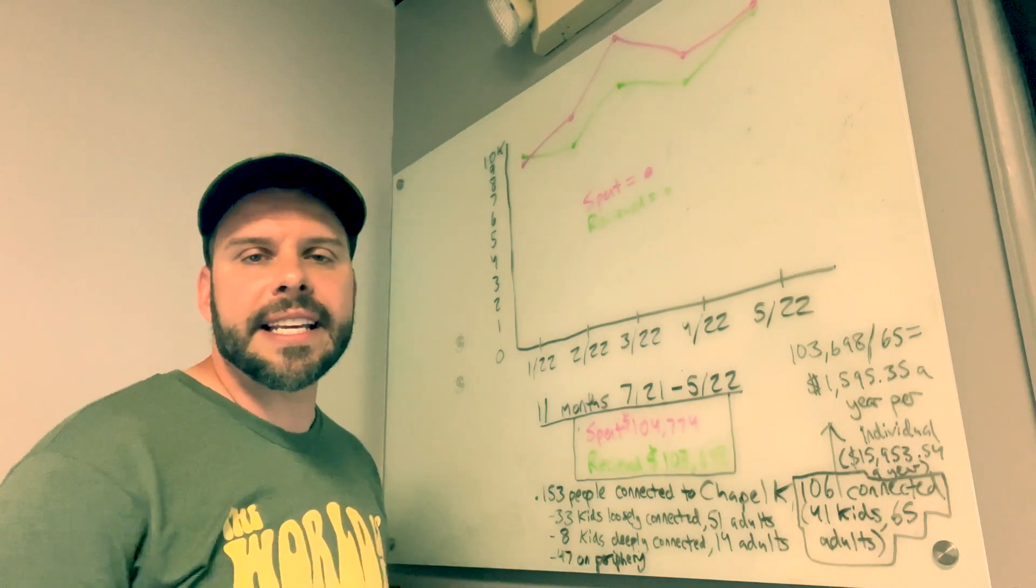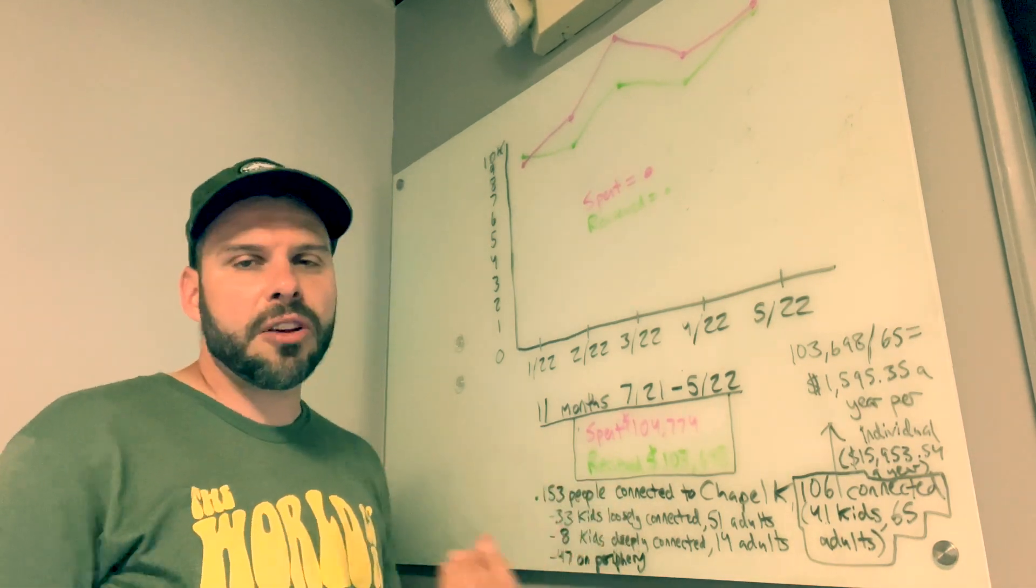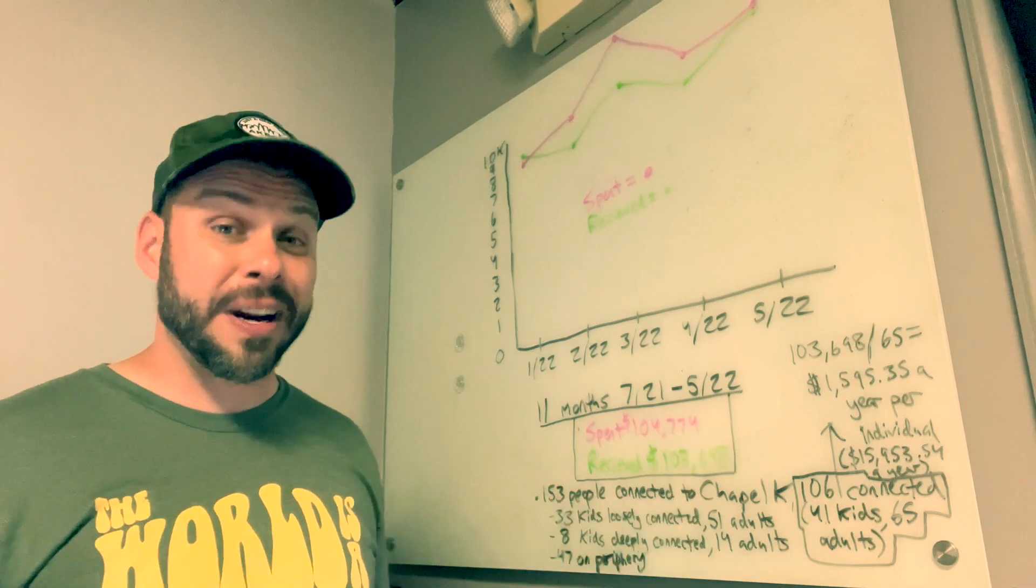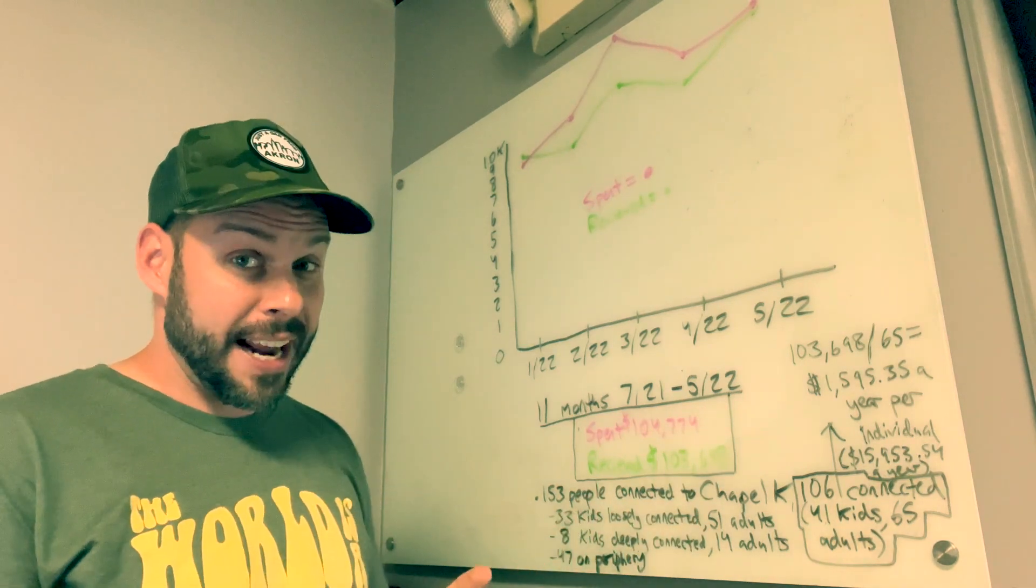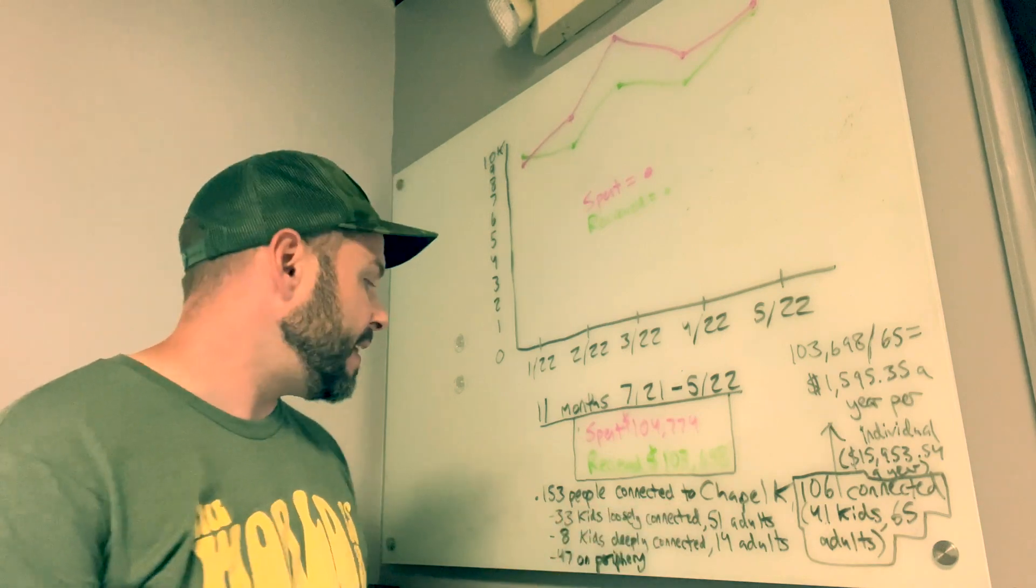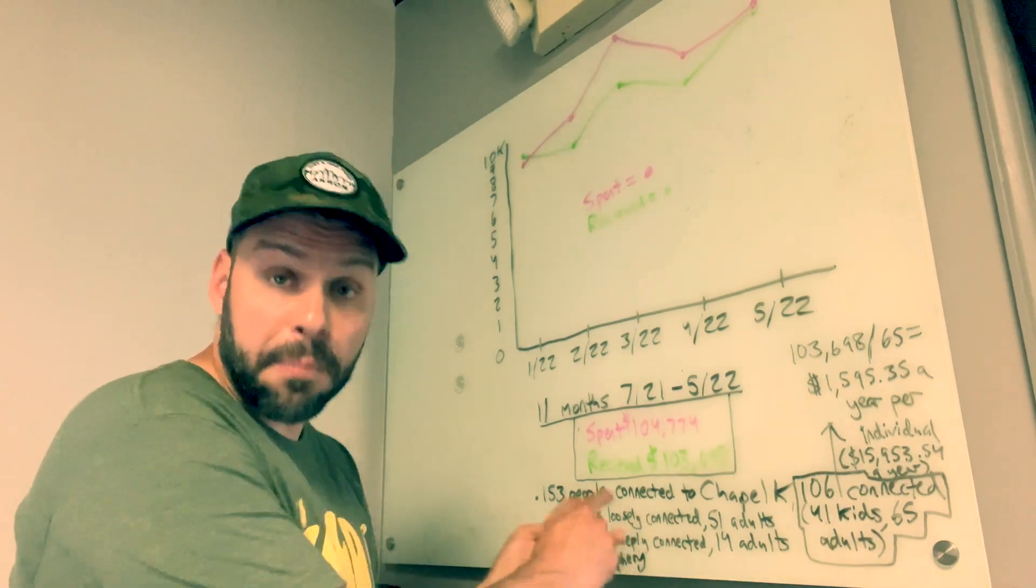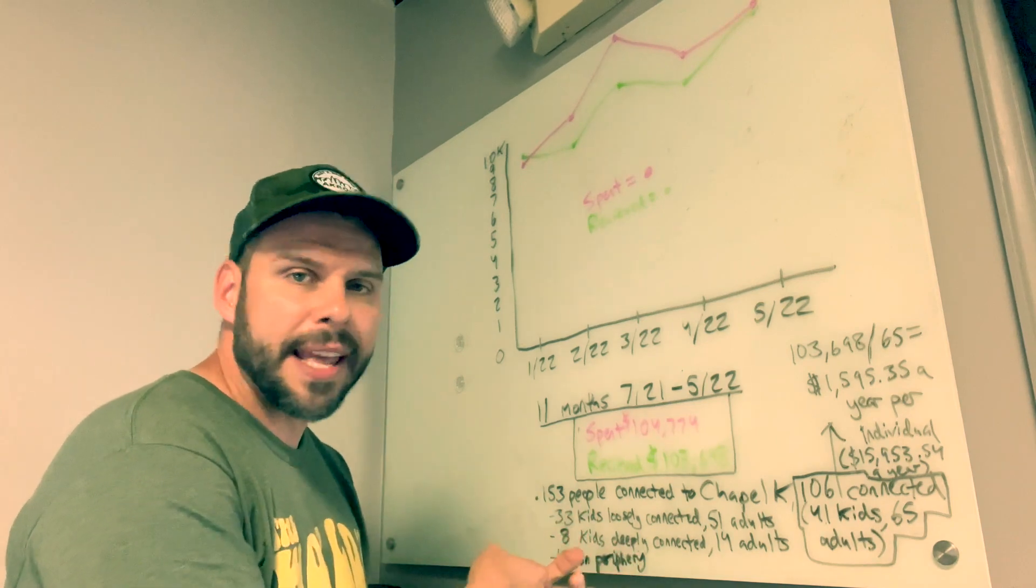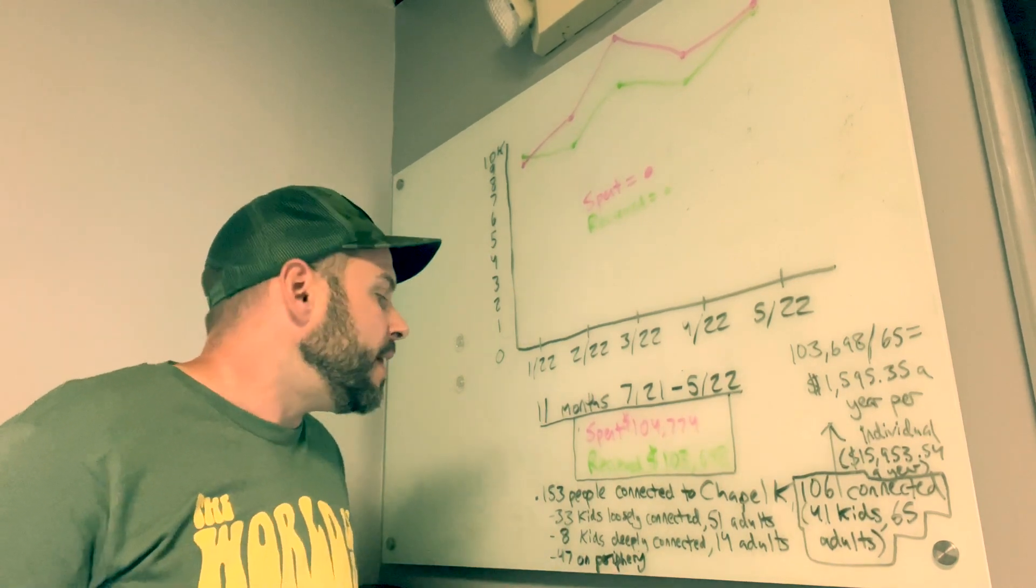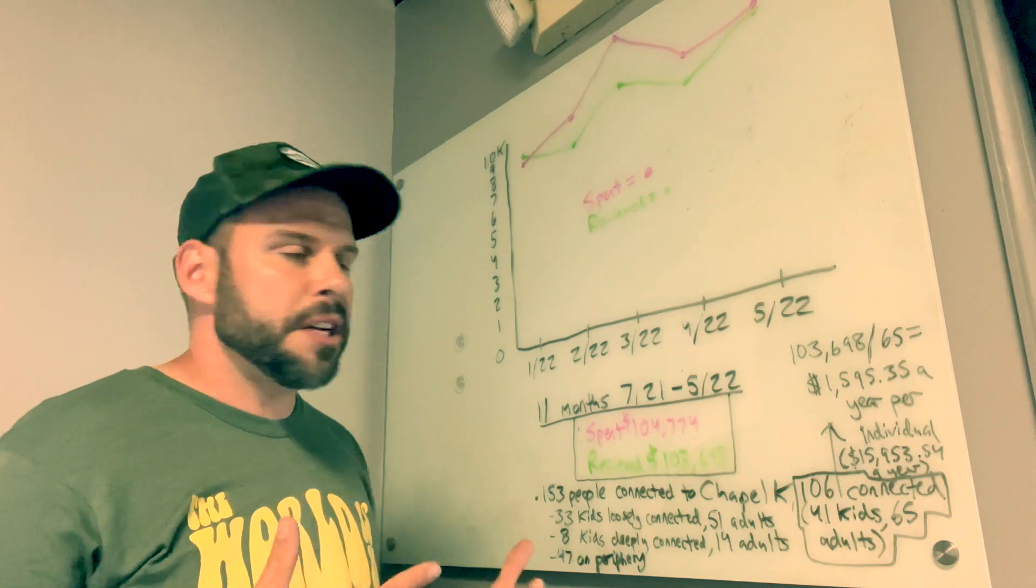That means they show up to everything. They are plugged into DNA discipleship group. They serve somehow. You can see why I bring up the issue of, come on, come be a part. Because if we did have 153 people that were deeply connected, could you imagine what would happen? By that point, we'd be planting another church. So I'm always calling the loosely connected to get deeply connected. I'm calling the people on the periphery to get loosely connected. We want to reach people that are ready to come in and deeply connect and want to join our mission.